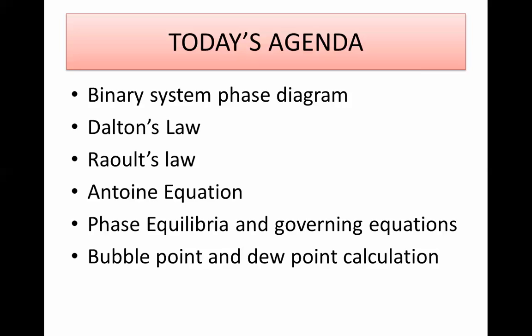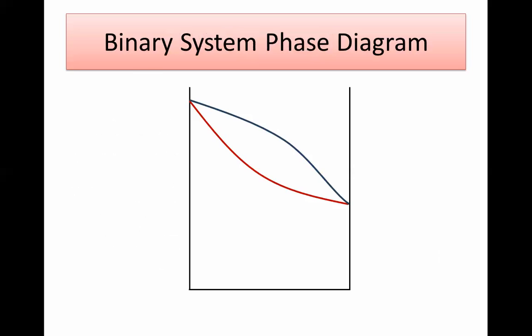We'll start with the binary system phase diagrams to revise them quickly, then talk about the most famous laws that govern equilibrium: Dalton's law and Raoult's law. After that, we'll cover the Antoine equation used to calculate vapor pressure of components, and then see how we use these three equations to do phase equilibrium calculations and perform bubble and dew point calculations. In this video we won't use Excel — that's for next video.